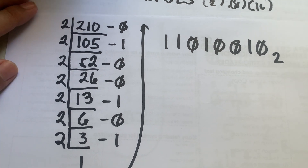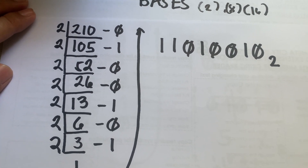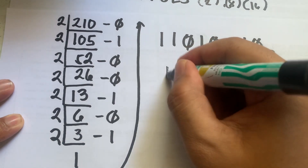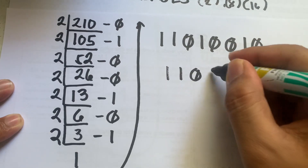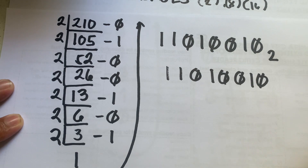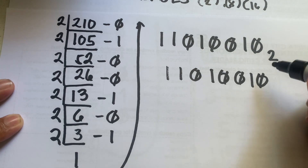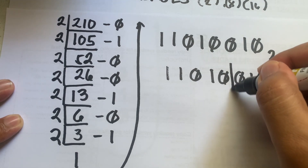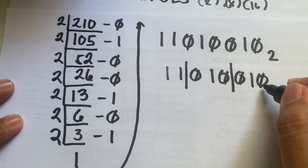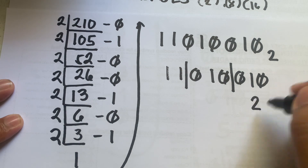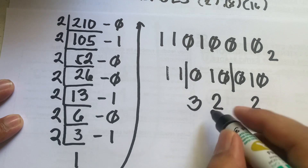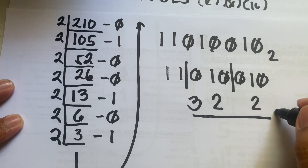From the binary equivalent, we can easily get the octal and hexadecimal equivalents. Rewriting 11010010 and grouping into sets of 3 from the right using positional values 1, 2, 4: the groups give 2, 2, and 3. So the octal equivalent of 210 is 322.